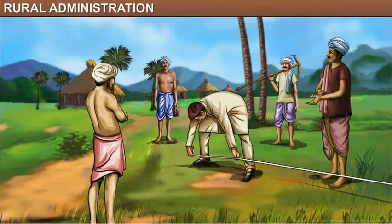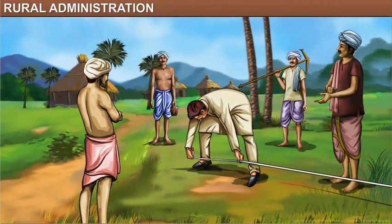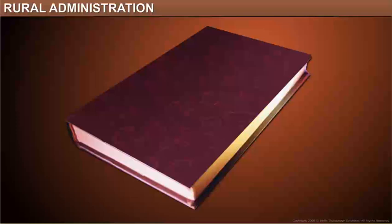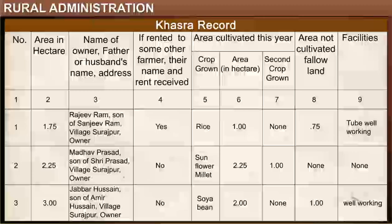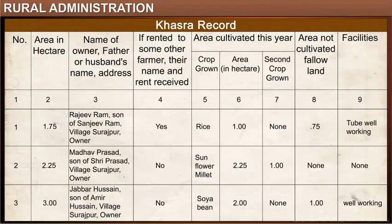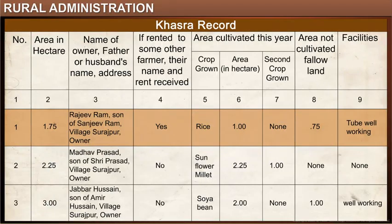The Patwari maintains the land records by measuring the plots. Usually a Khasra record is maintained, which gives information regarding the owners of different plots of land. The Khasra number is a plot number given to a specific piece of land, which is owned by a villager or village community. This information is very crucial to farmers who need to produce the land record at the time of land division or during buying or selling of land.